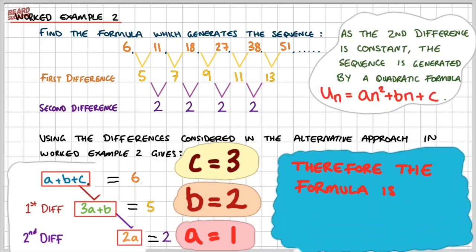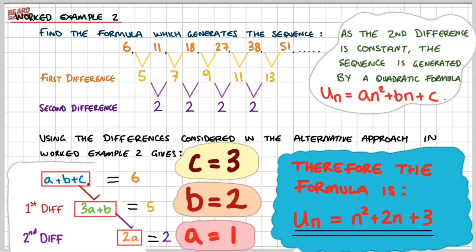Therefore, the formula is un equals n squared plus 2n plus 3. All we've done is substituted our values of a, b, and c into the standard form: a equals 1 gives 1n squared, which is n squared; b equals 2 gives 2n; and c equals 3 gives 3. So un equals n squared plus 2n plus 3.